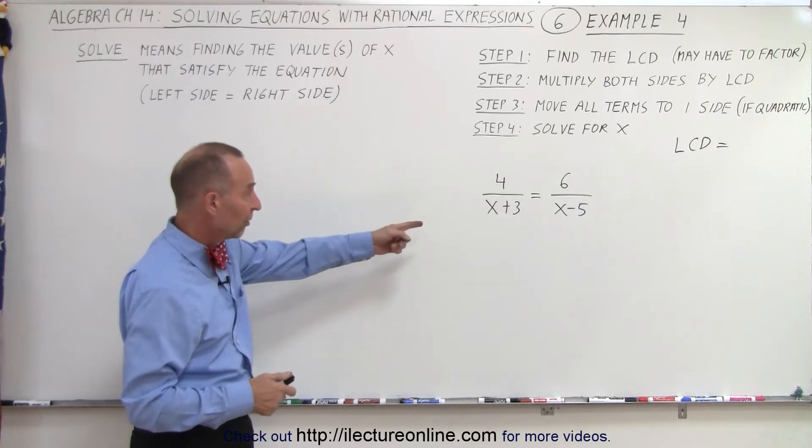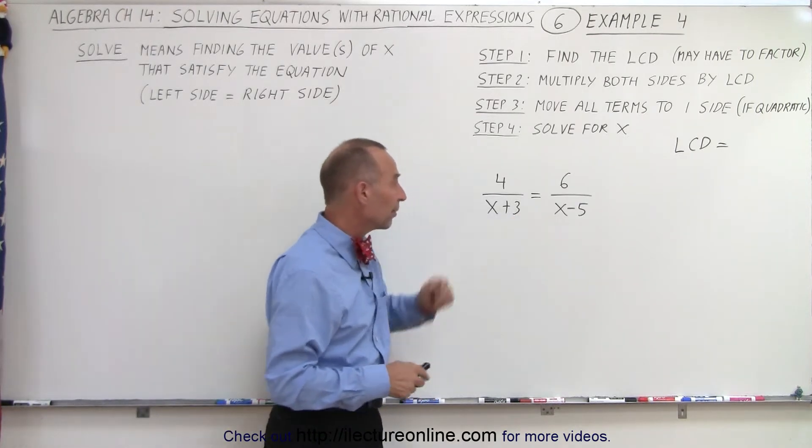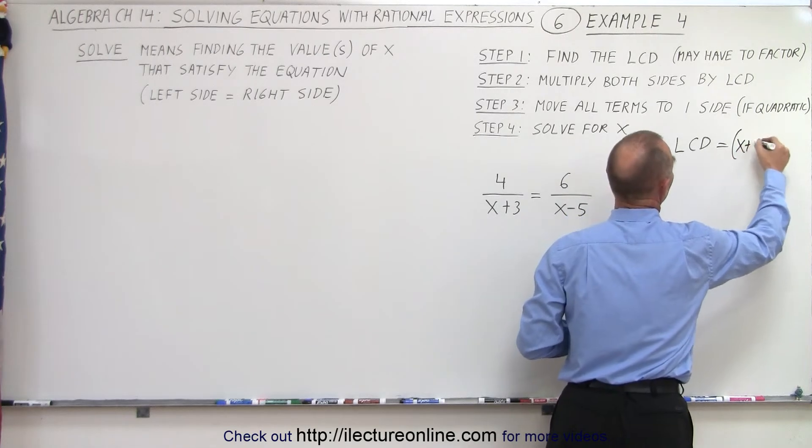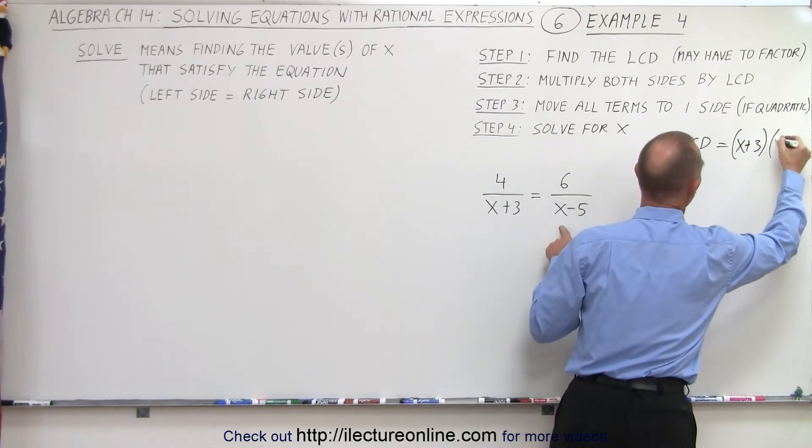And by the way, in this case, the lowest common denominator is going to be the product of these two denominators. So it would be (x+3) times (x-5).